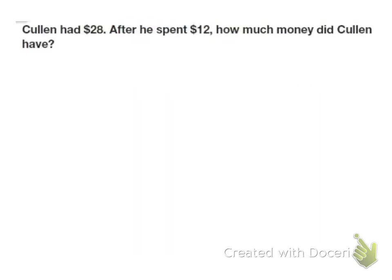So here I have Cullen had $28. After he spent $12, how much money did Cullen have? We have some, some went away, equals what I have left. So he had some money, he had $28.